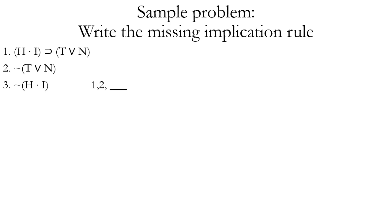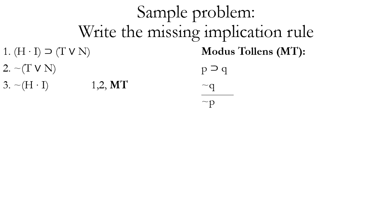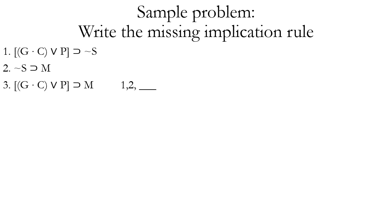Another example: premise one is a conditional, and premise two is a negation of the consequent of that conditional. On line three we're deducing the negation of the antecedent — so the rule is modus tollens. Even with more complex operators, the overall pattern is the same: one premise is a horseshoe, the other negates the consequent. The same logic applies if we reverse the order of lines one and two.